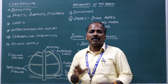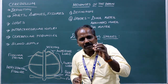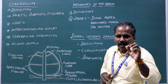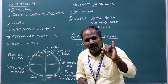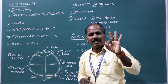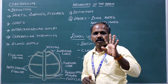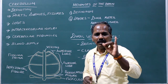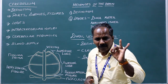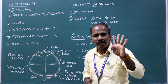Intracerebellar nuclei. Intra means within, so the cerebellum contains nuclei. They are: number one, dentate nucleus; number two, emboliform nucleus; number three, fastigial nucleus; number four, globus nucleus. A mnemonic: D, E, F, G — dentate, emboliform, fastigial, and globus nucleus.